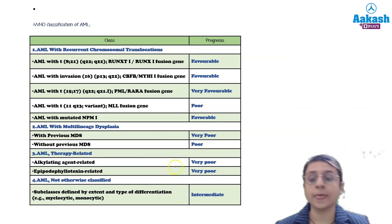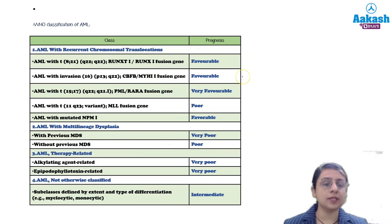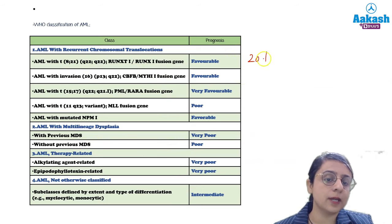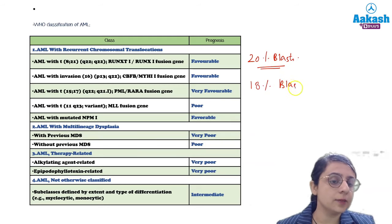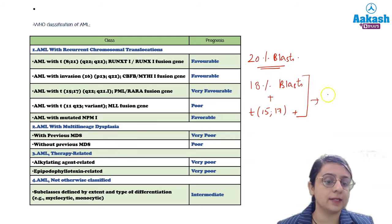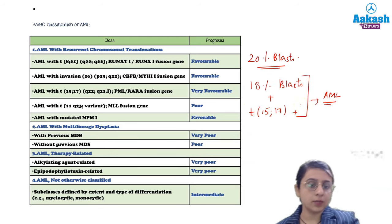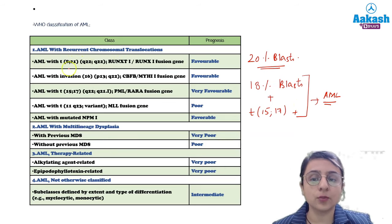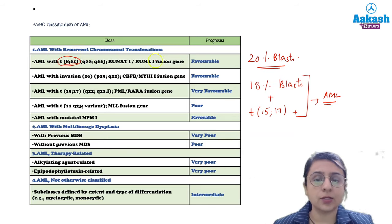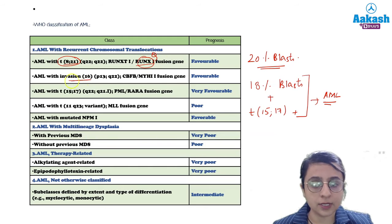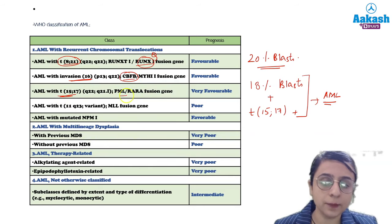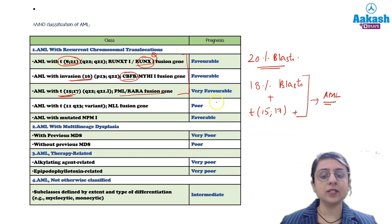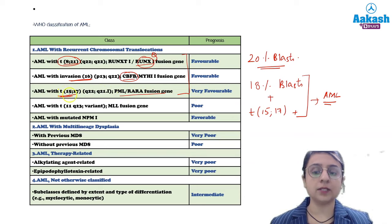Now, the WHO classification — according to WHO, at least 20% blasts are needed. The exception to remember is: even if a patient has, say, 18% blasts, if genetic testing shows translocation t(15;17), you can still classify it as AML. The exception is that even if blast count is less than 20%, the presence of certain chromosomal translocations — t(8;21) associated with RUNX1 fusion gene, inv(16) or t(16;16) associated with core binding factor gene, or t(15;17) associated with PML-RARA fusion gene — the case will be diagnosed as AML.